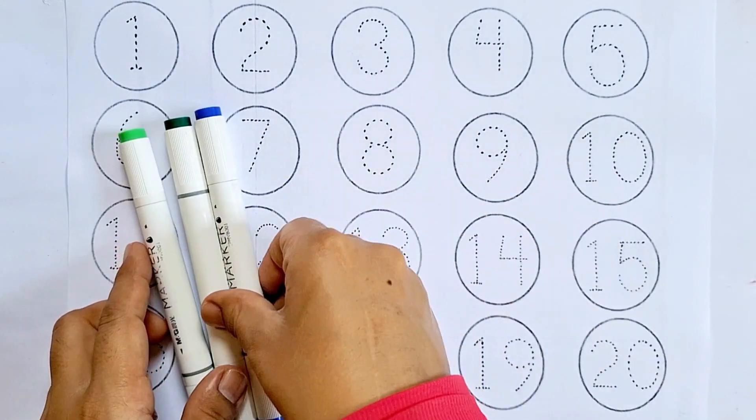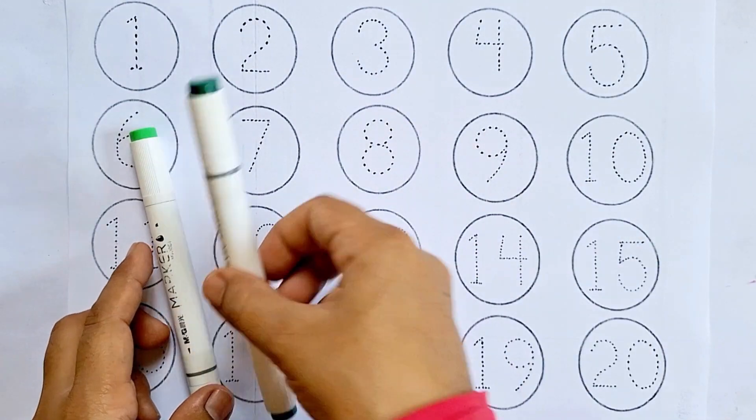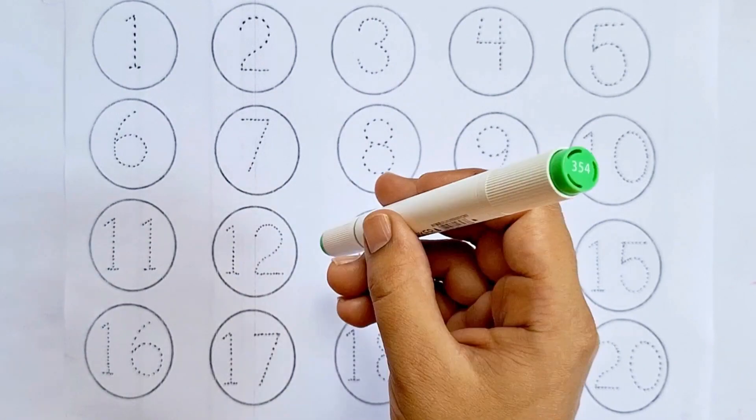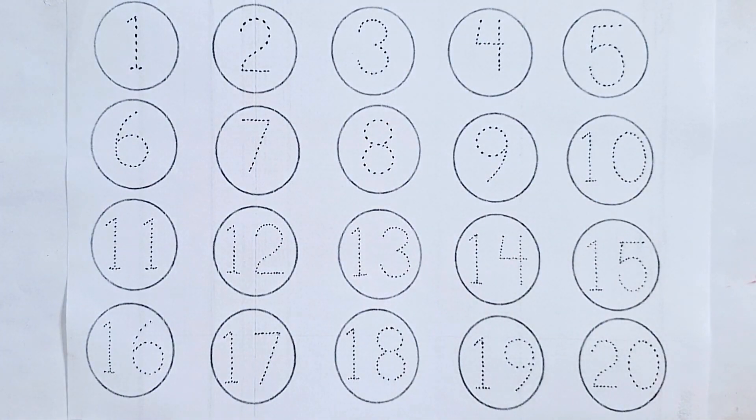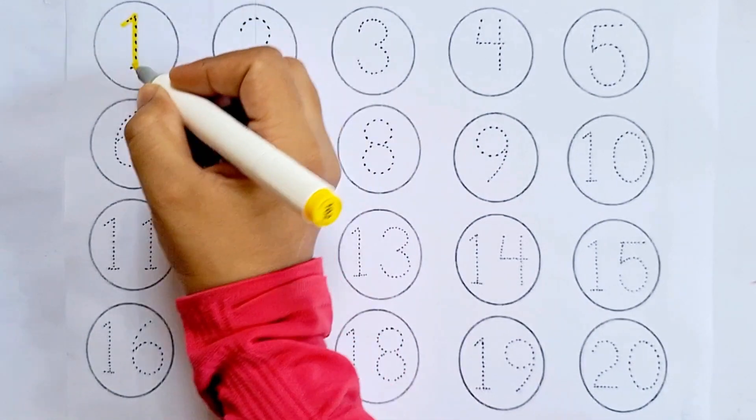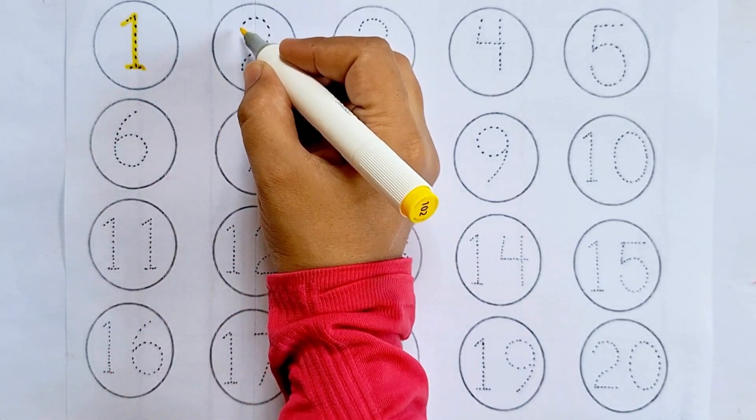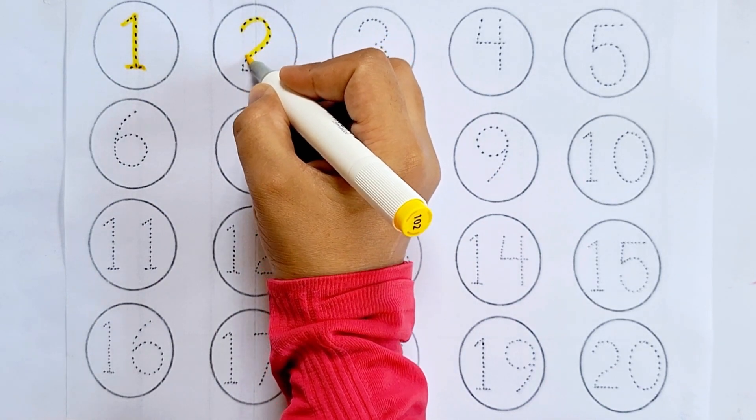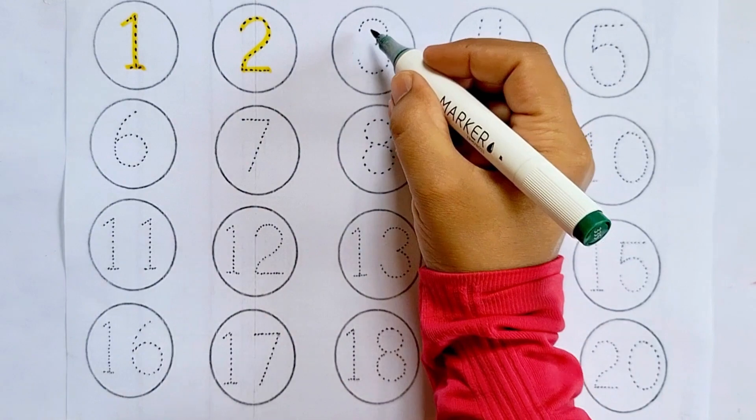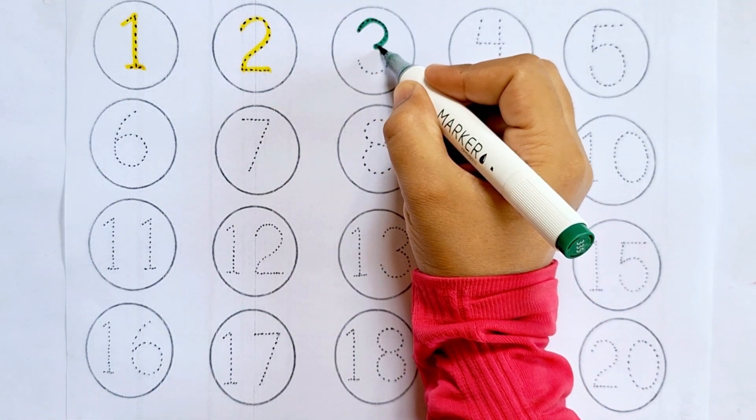Dark blue color, dark green color, light green color. One, this is one. Two, this is two. Three, this is three.